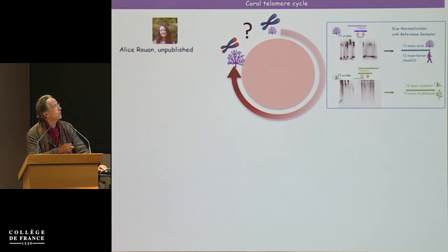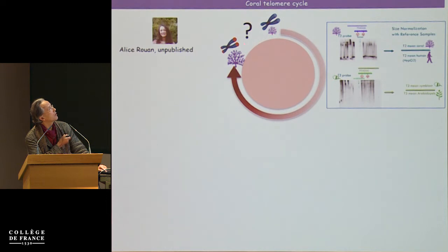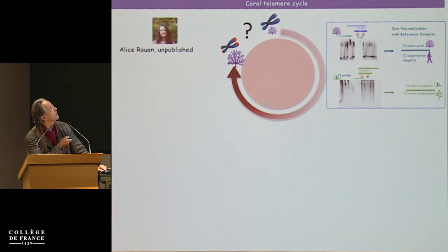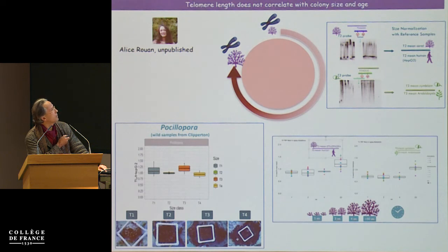The first question when starting with a new model where almost nothing is known about coral telomeres is to understand the coral telomere cycle: do they shorten their telomeres like humans? That's the first question to answer. We designed a strategy using the gold-standard method for telomere length measurement — a Southern blotting approach — and normalized everything to a human or Arabidopsis telomere in order to have reliable and comparable results at large scale. This is the work of PhD student Alice Rouen.